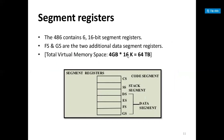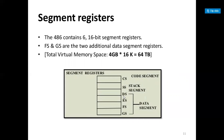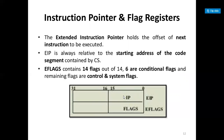The 486 contains six 16-bit segment registers, same as the 80386: code segment, stack segment, data segment, extra segment, FS, and GS. FS and GS are two additional data segment registers. There is also a 16-bit instruction pointer IP along with the 32-bit EIP (extended instruction pointer).